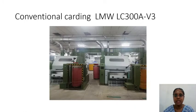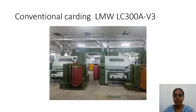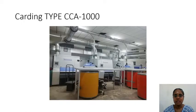In the blow room, cleaning as well as mixing takes place, and blending if applicable. In the next process — carding — the lap is converted into sliver form with intense cleaning happening. The sheet or lap form is converted into sliver form. This shows both a Truetzschler card and an LMW card.